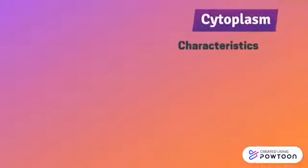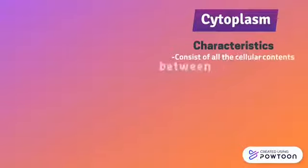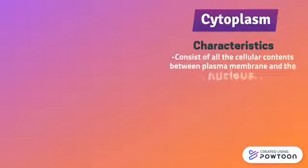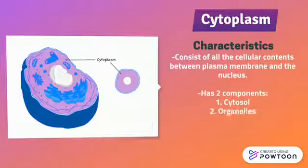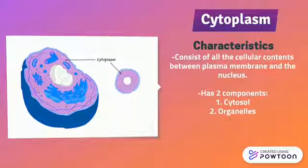The cytoplasm consists of all the cellular contents between the plasma membrane and the nucleus. It has two components: cytosol and organelles.